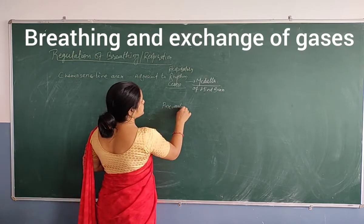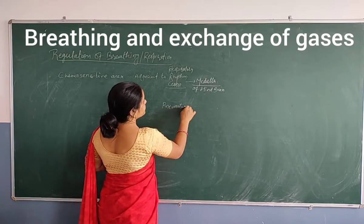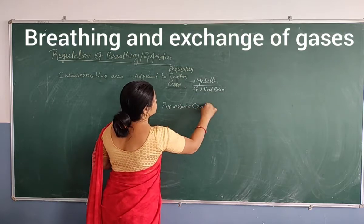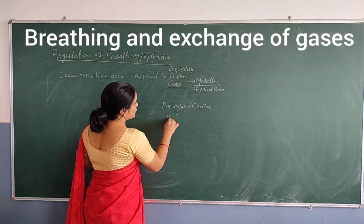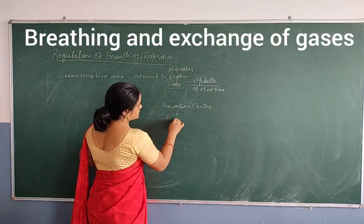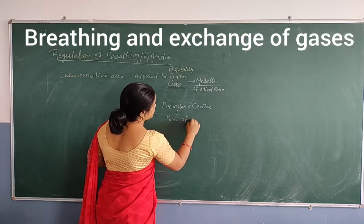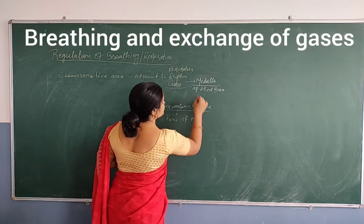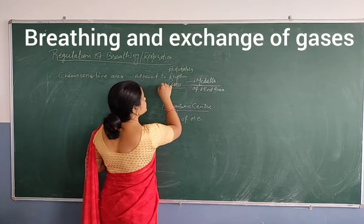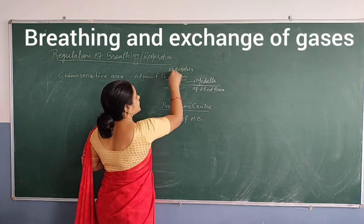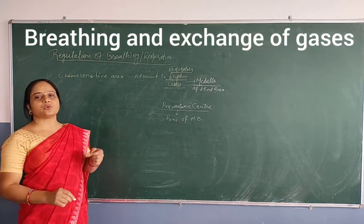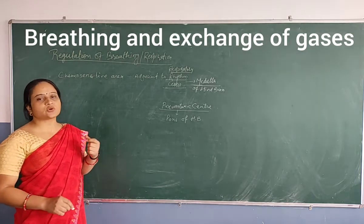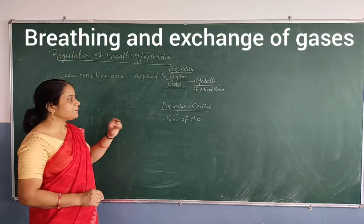One more centre, named as the pneumotaxic centre, is also located in the pons region of the hind brain. These are the two centres which help in regulation of the respiratory mechanism of the respiratory pathway.